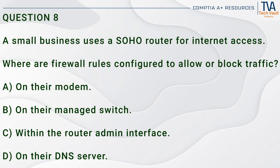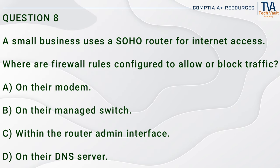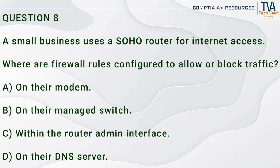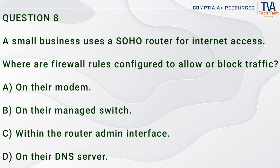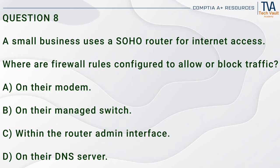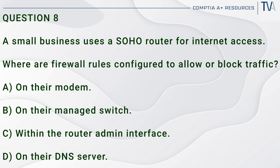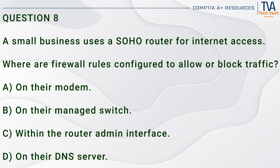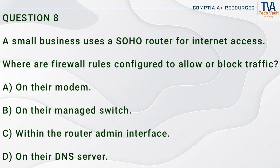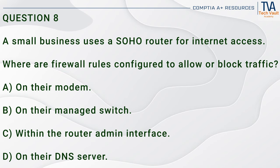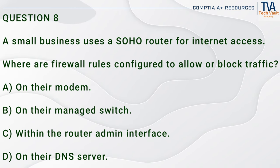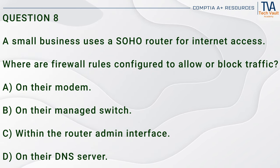Question 8. A small business uses a SOHO router for internet access. Where are firewall rules configured to allow or block traffic? A. On their modem. B. On their managed switch. C. Within the router admin interface. D. On their DNS server.